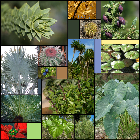A leaf is an organ of a vascular plant and is the principal lateral appendage of the stem. The leaves and stem together form the shoot. Leaves are collectively referred to as foliage, as in autumn foliage.